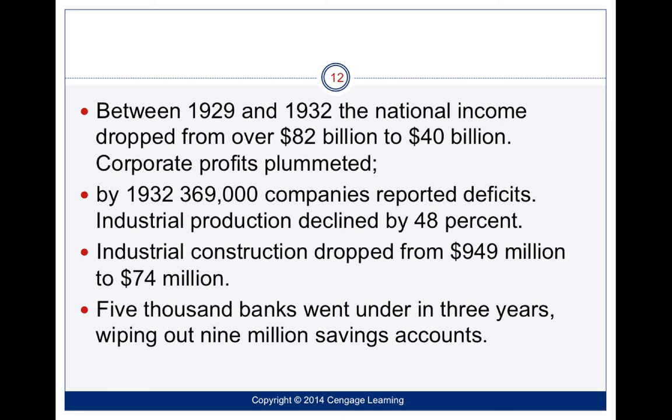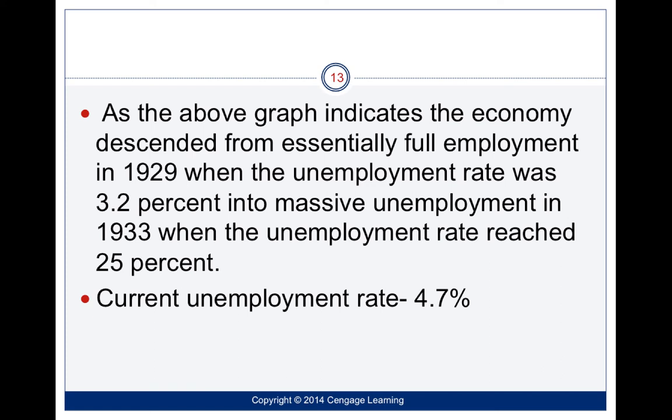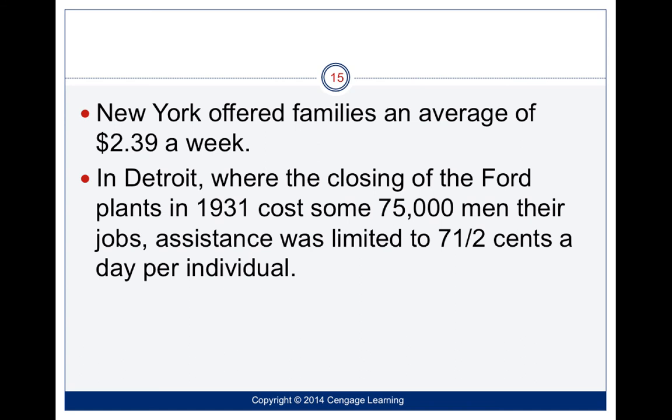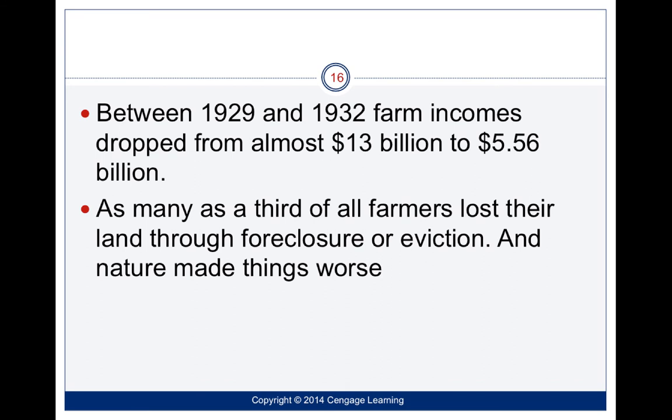The 1929 employment rate was 33.2%, and then in 1933 unemployment hit 25%. By comparison, today's unemployment rate is right around 4% pre-pandemic, though that number is going to be increasing as people are laid off from hotels and other sectors. There wasn't much protection for people. New York was offering families an average of $2.39 a week, Ford closed plants costing 75,000 men their jobs, and assistance was limited to just 7.5 cents a day.